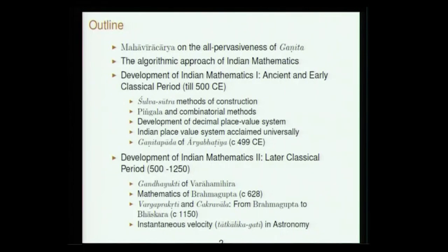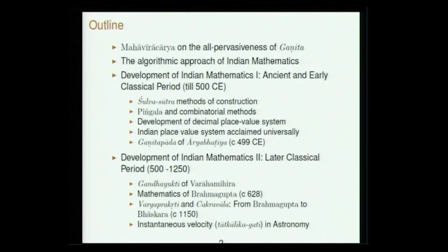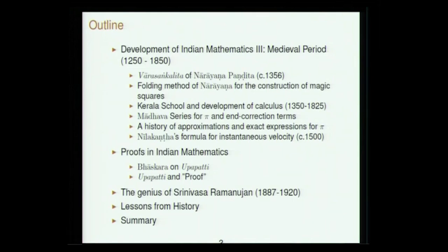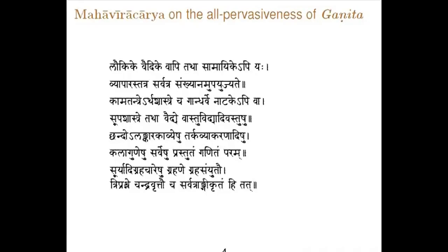The outline covers the development of Indian mathematics in the ancient period with some highlights, then the early classical period from around 500 BCE to 500 CE which culminated in the work of Aryabhata. Then the development of mathematics in the later classical period from 500 CE to 1250, followed by glimpses of the medieval period till about 1850. Towards the end we will discuss the nature of mathematics in India — how mathematics was understood, how results were proved — and finally an overview touching on Srinivas Ramanujan.